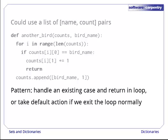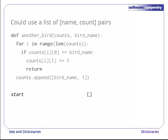Let's take a look at this function in action. We start with an empty list. If our first bird name is Loon, we find no match, since the list is empty, so we add a pair to the list.